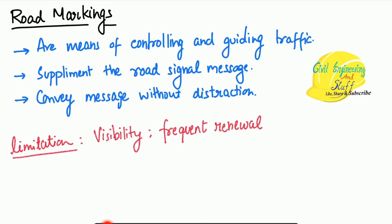Road markings are a means of controlling and guiding traffic, and they supplement the road signal message. They aim to convey the message without any distraction. Along with traffic signals, these road markings are placed so that whatever message the traffic engineer wants to convey is communicated to the traveler in a very easy and efficient way. Road markings do serve their purpose well.